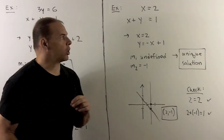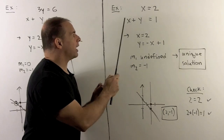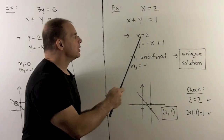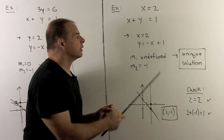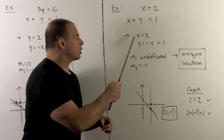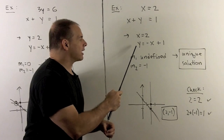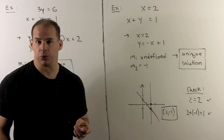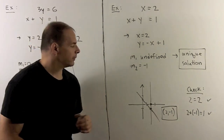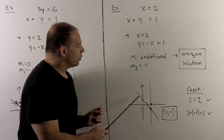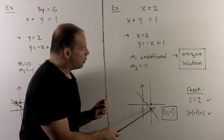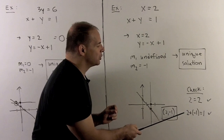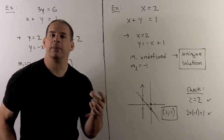Finally, an example with a vertical line. Consider the system x equals 2 and x plus y equals 1. In slope-intercept form: x equals 2 (vertical line, slope undefined) and y equals negative x plus 1 (slope minus 1). Since undefined slope is not equal to minus 1, we have a unique solution. Graphing: a vertical line through x equals 2 intersects our previous line at the point (2, minus 1). Checking: 2 equals 2 ✓, and 2 plus (minus 1) equals 1 ✓. That checks out, so (2, minus 1) is our answer.